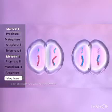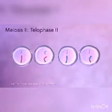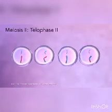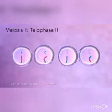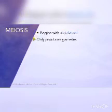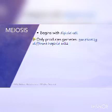During anaphase two, the sister chromatids of each chromosome separate and move to opposite poles. Once the sister chromatids separate, they are called chromosomes. Finally, during telophase two, the spindle fibers disappear, the nuclear membrane reforms, and cytokinesis occurs in both cells. Meiosis ends with four genetically different haploid daughter cells, each containing one set of chromosomes.